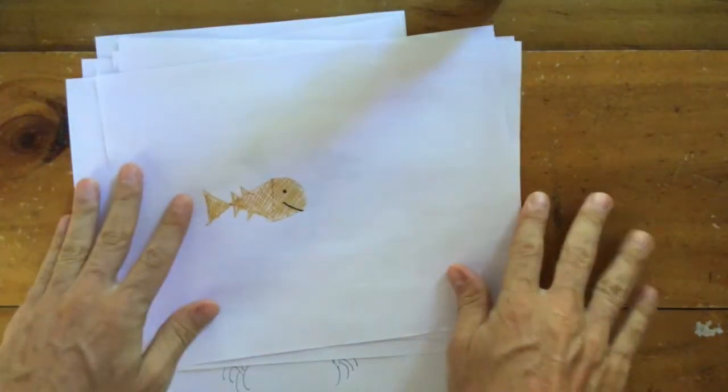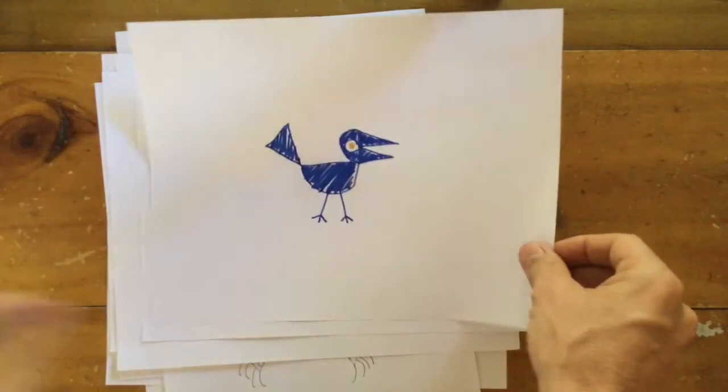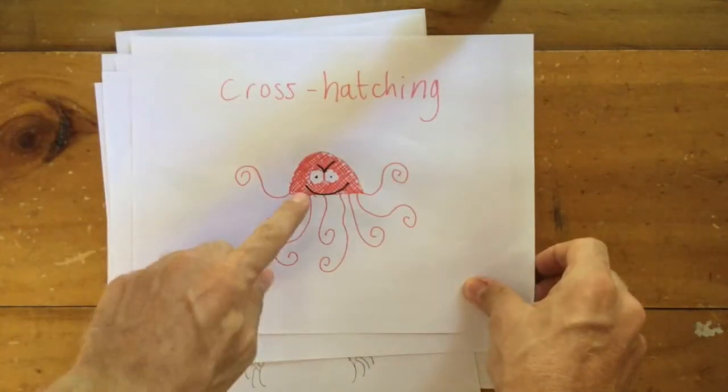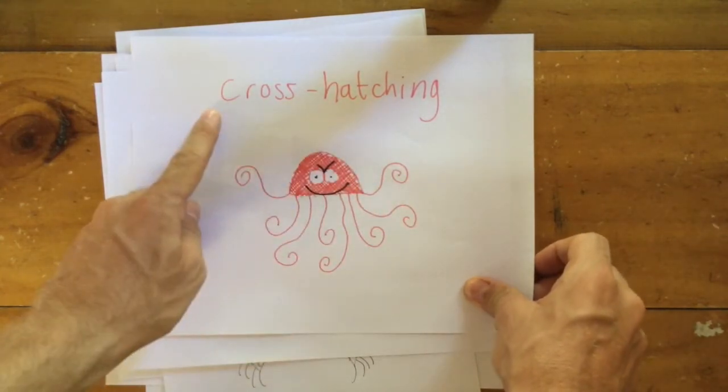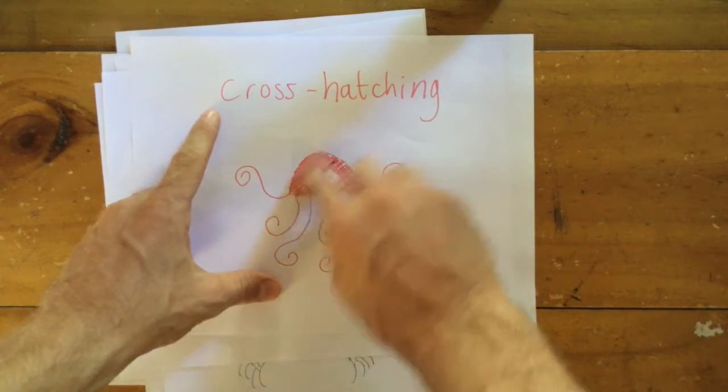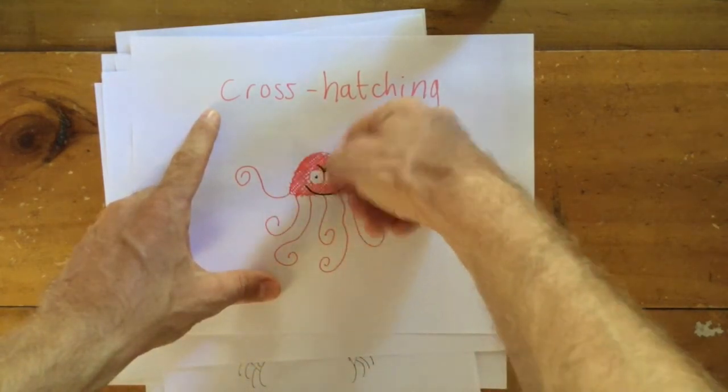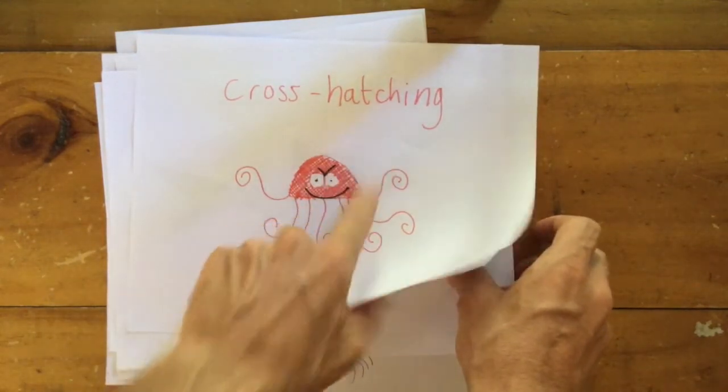Wow, what a lot of animals. We started with the very simple little fish. We had the bird, the mean octopus, and that's crosshatching. Who remembers what that is? That's the name of this technique, where you go one way, and then another way, with a marker, or a pencil, or anything. It's all called crosshatching.